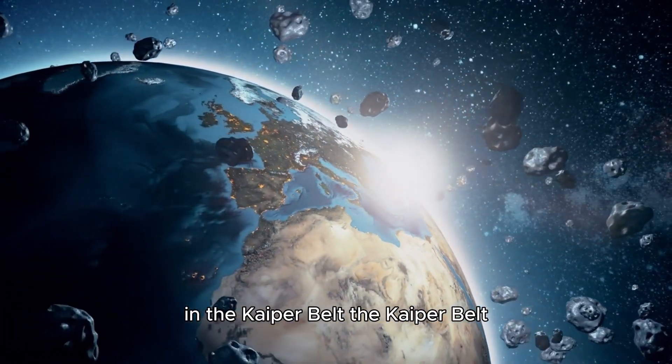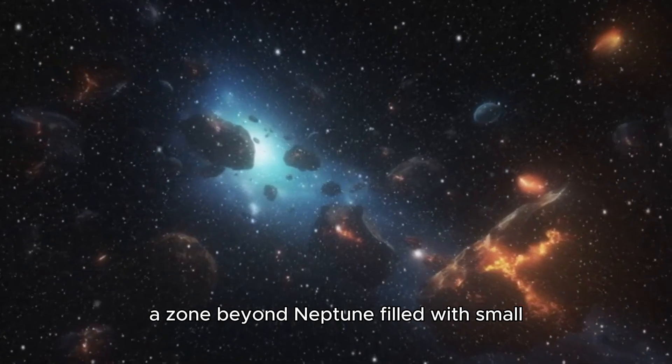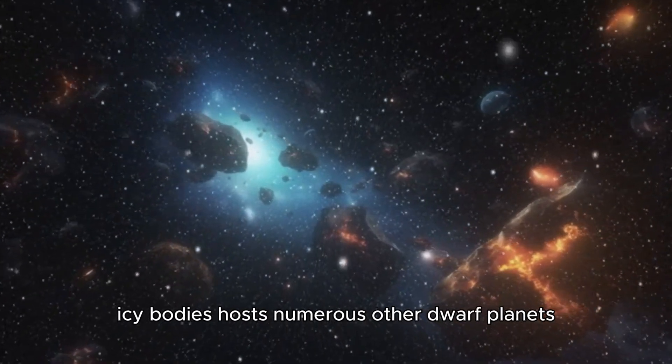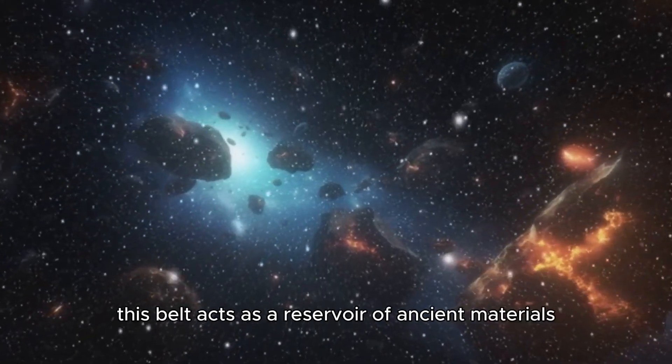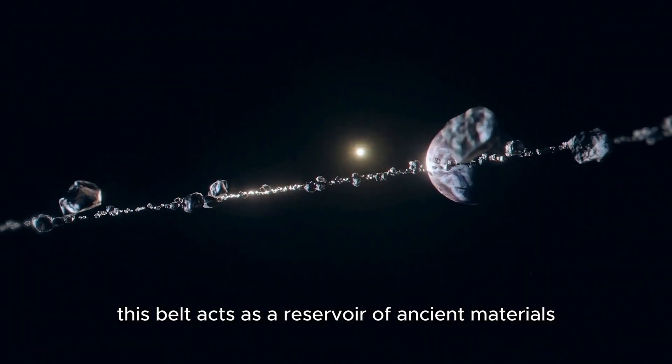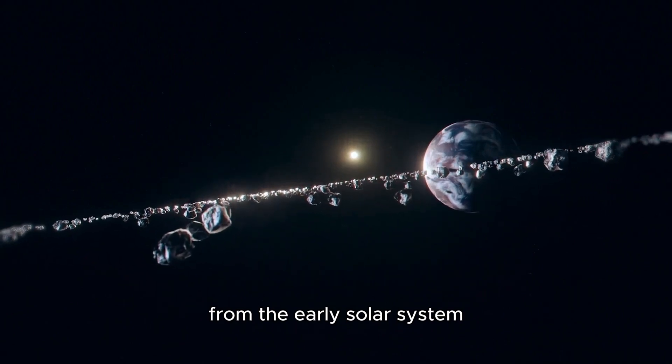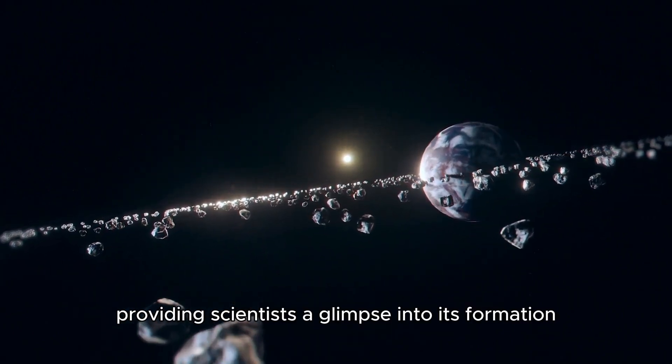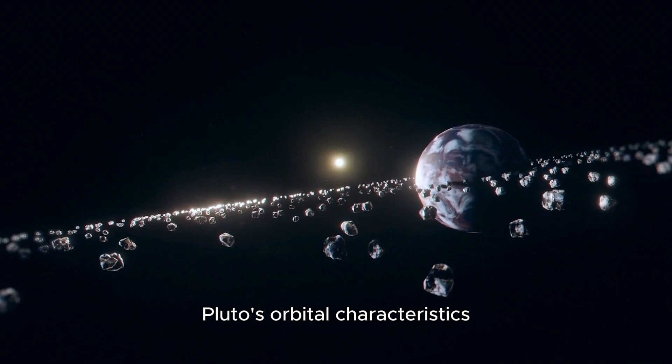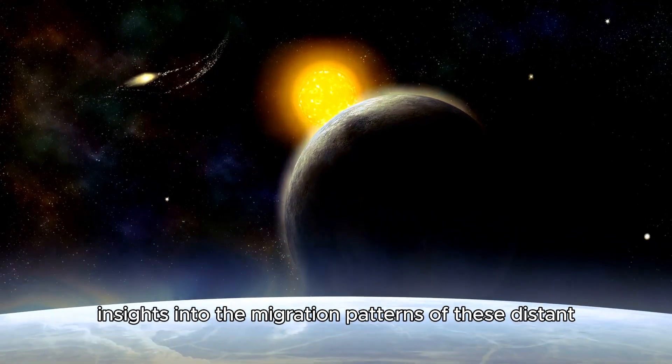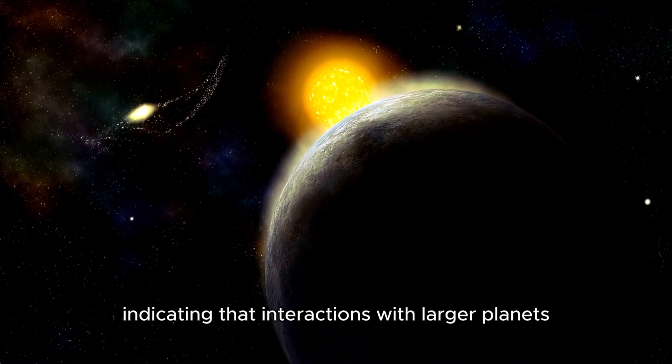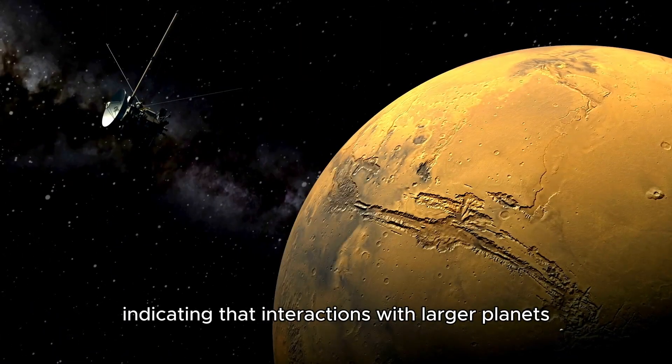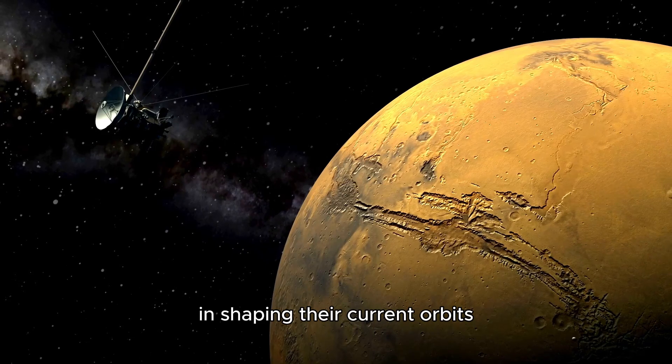The Kuiper Belt, a zone beyond Neptune filled with small icy bodies, hosts numerous other dwarf planets and potential impactors. This belt acts as a reservoir of ancient materials from the early solar system, providing scientists a glimpse into its formation. Pluto's orbital characteristics might offer insights into the migration patterns of these distant objects, indicating that interactions with larger planets may have played a crucial role in shaping their current orbits.